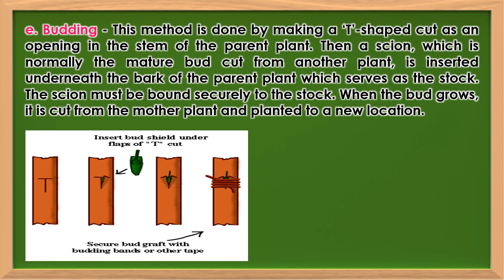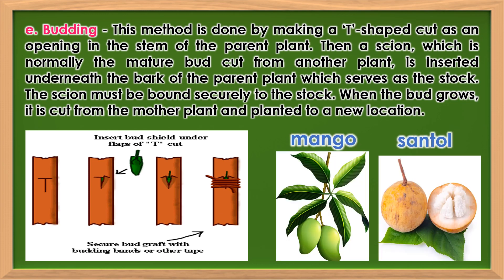Budding: This method is done by making a T-shaped cut as an opening in the stem of the parent plant. Then a scion — normally the mature bud cut from another plant — is inserted underneath the bark of the parent plant, which serves as the rootstock. The scion must be bound securely to the rootstock. When the bud grows, it is cut from the mother plant and planted in a new location. Mango and santol can be propagated through this method.